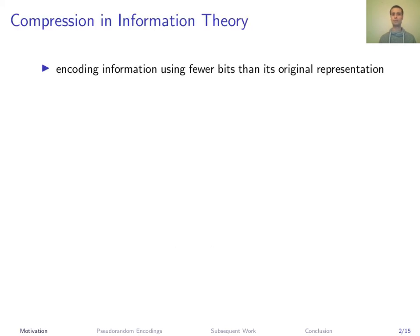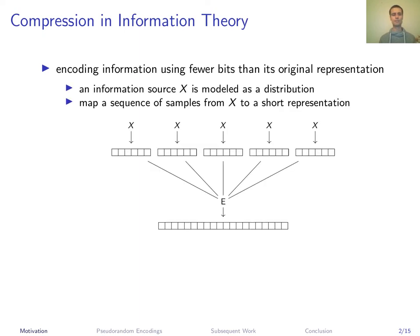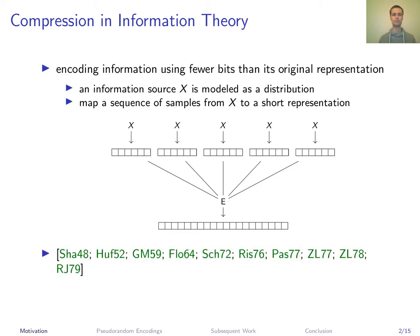Let's first start by recalling the notion of compression. Compression aims to encode information with fewer bits than its original representation requires. In information theory, information is usually modeled as samples from some probability distribution X, and the goal of compression is to encode a sequence of samples from X into a short string such that it can still be efficiently recovered. There is a rich body of literature on compression in the field of information theory.